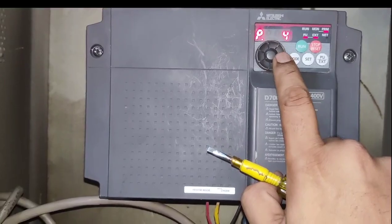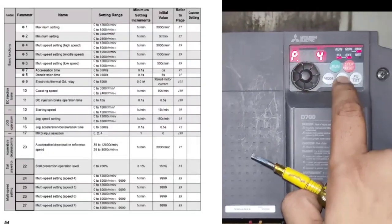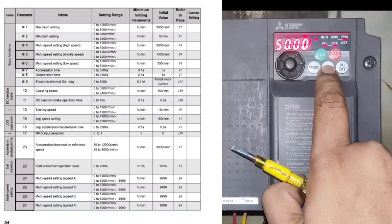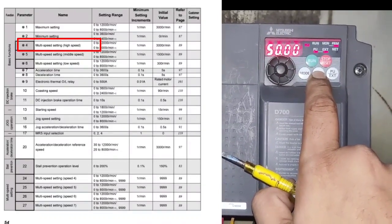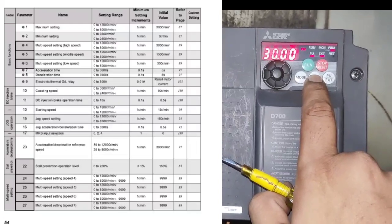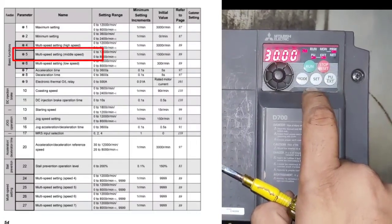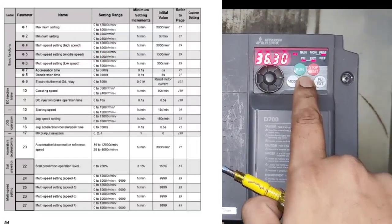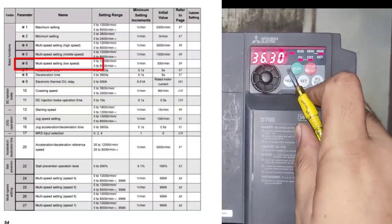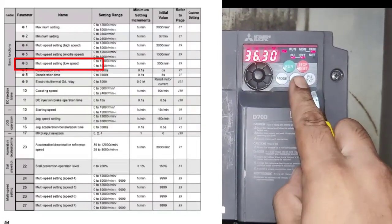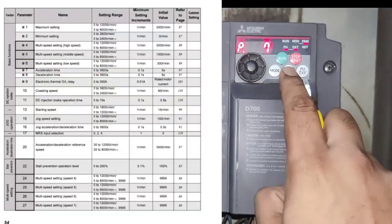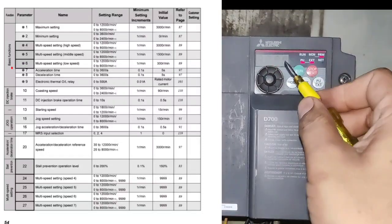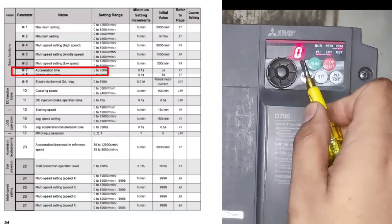Next parameter is P4. If you want to run your motor in multi-speed function, P4 is for high speed — we set 50 Hz. P5 is for middle speed — we set 30 Hz. P6 is for low speed — you can manually set whatever frequency you want to run at.